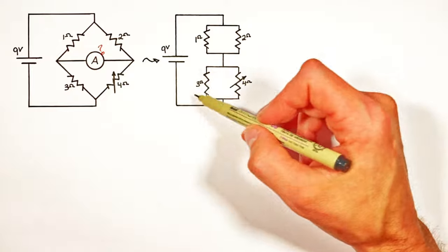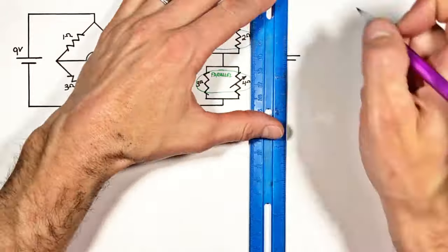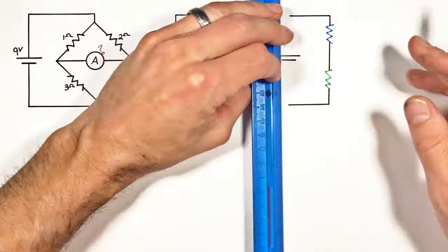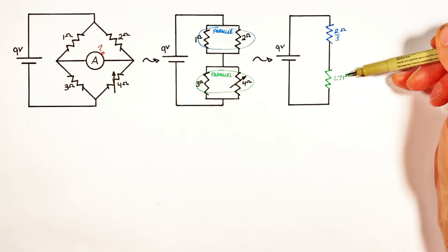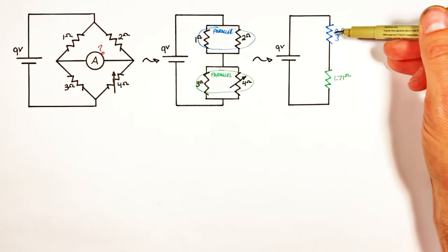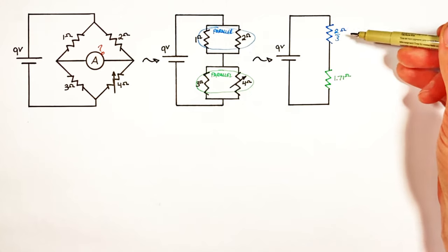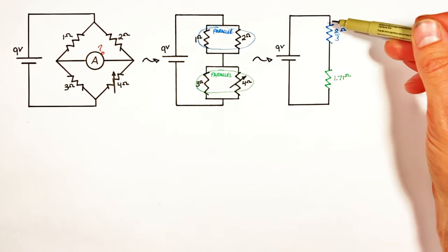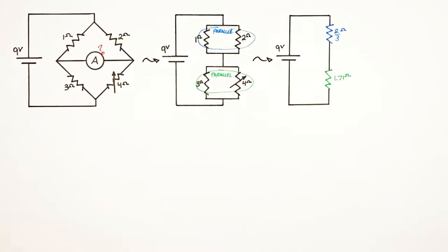Combining each of these sets of resistors in parallel, we get a circuit which is just two resistors in series with one another. One of these resistor values is a fraction and the other is a decimal, but these two resistors are in series so we can reduce this further down to the equivalent resistance.